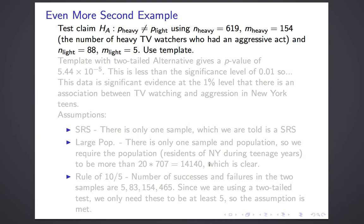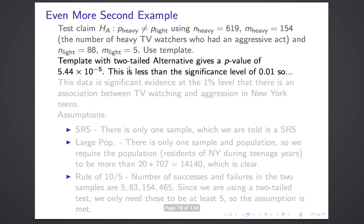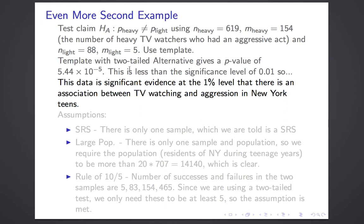Here's our data. Under the heavy category: sample size 619, with 154 successes. Under the light category: sample size 88, with 5 successes. Using the two-tailed alternative, the p-value is 5.44 × 10⁻⁵ — considerably less than the significance level of 0.01. We conclude: this data is significant evidence at the 1% level that there's an association between TV watching and aggression in New York teens.